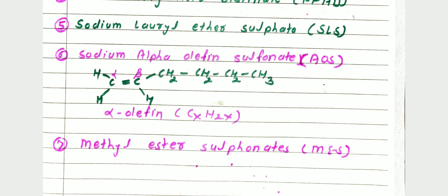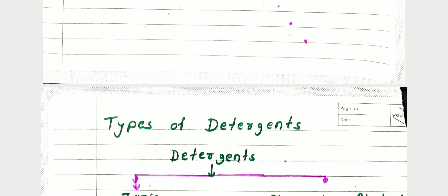The seventh raw material is methyl ester sulfonates (MES) — M for methyl, E for ester, S for sulfonate. MES are anionic surfactants made by sulfonation of saturated fatty acids — those containing carbon-carbon single bonds. The methyl esters are derived from natural oils and fats like coconut, palm, tallow, or soya. They are biodegradable and have high detergency, so they are usually used in laundry detergent powders and cakes. These seven are the raw materials used in manufacture of detergents.